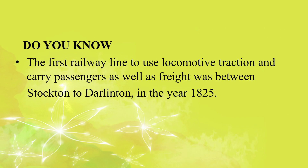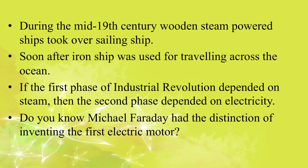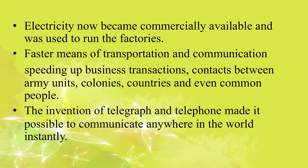The first railway line to use locomotive traction and carry passengers as well as freight was between Stockton and Darlington in 1825. During the mid-19th century, wooden steam-powered ships took over sailing ships, and soon iron ships were used for travelling across the seas. If the first phase of the Industrial Revolution depended on steam, then the second phase depended on electricity. Michael Faraday had the distinction of inventing the first electric motor. Electricity became commercially available and was used to run factories. The invention of the telegraph and telephone made it possible to communicate anywhere in the world instantly.